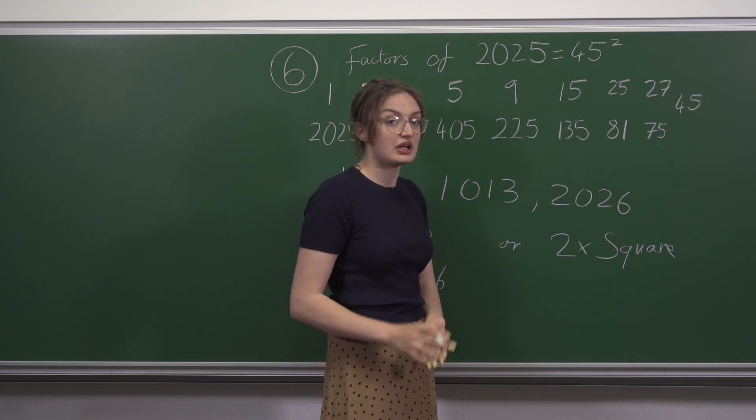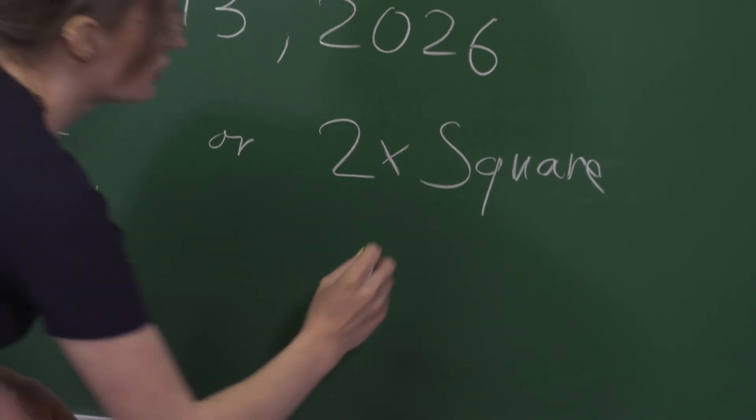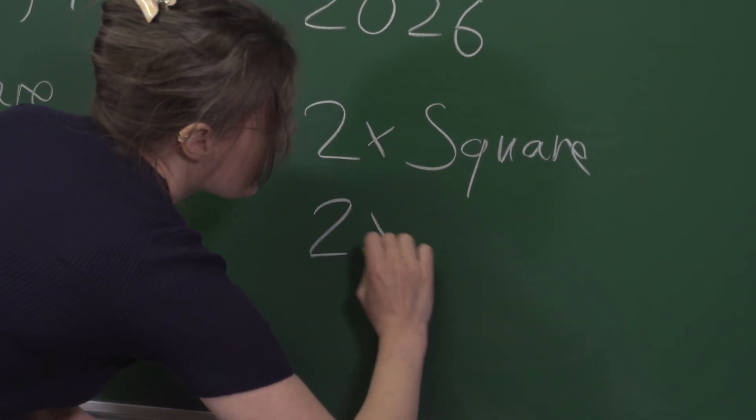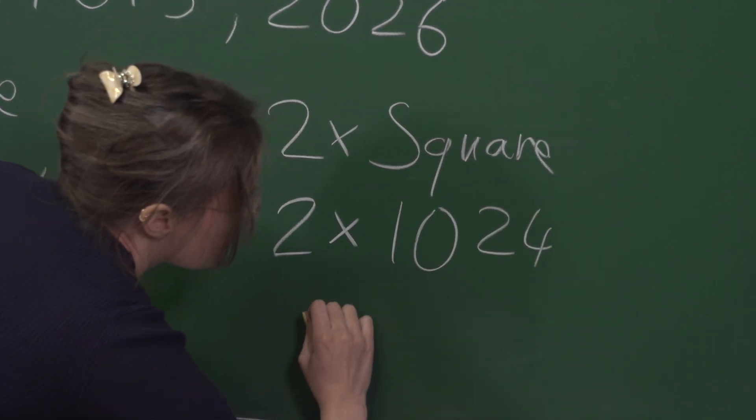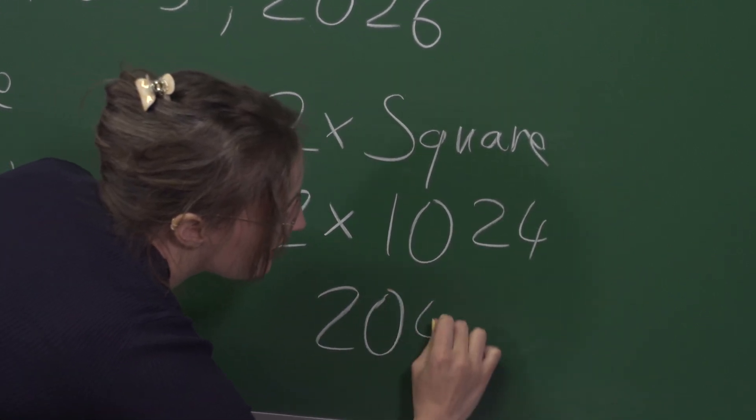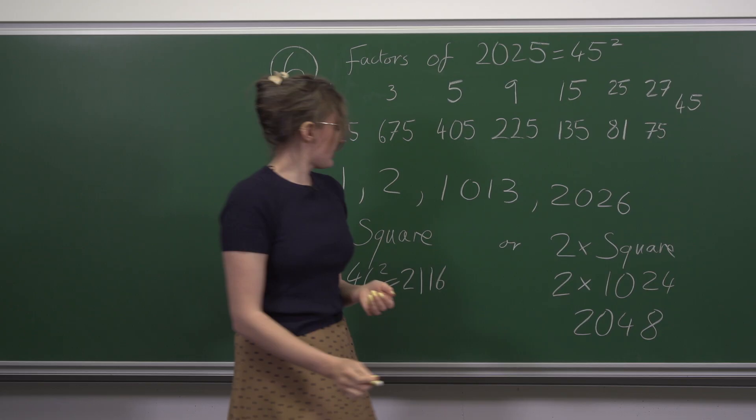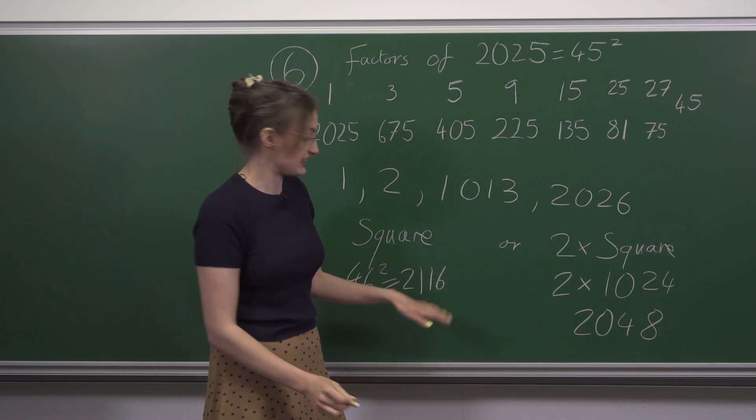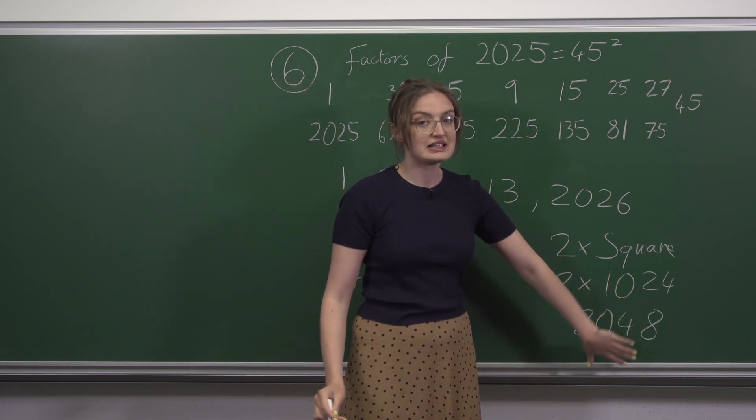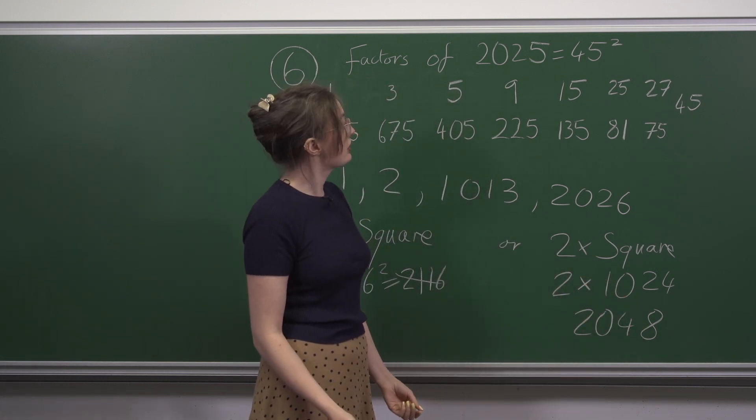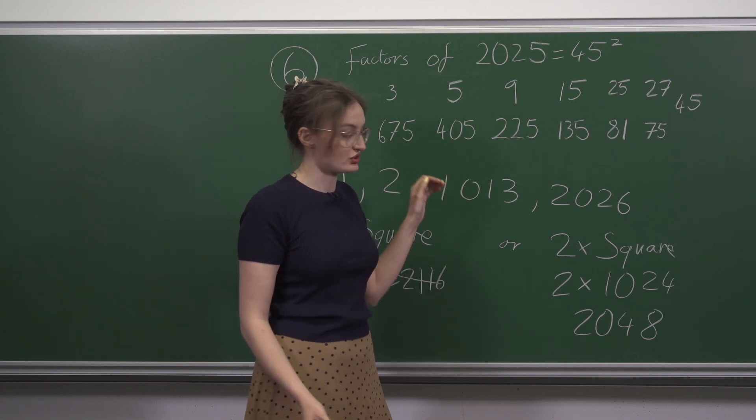1024 is 32 squared. So 2 times 1024 is 2048. That beats 2116. So 2048 is the next number which has the sum of its factors odd.